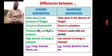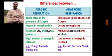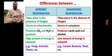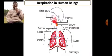A high amount of energy is released in aerobic respiration, whereas a comparatively very low amount of energy is released by anaerobic respiration. Examples for aerobic respiration: fungi, animals, plants. Examples for anaerobic respiration: certain bacteria and yeasts. Now let's look at the respiratory system — respiration in human beings.